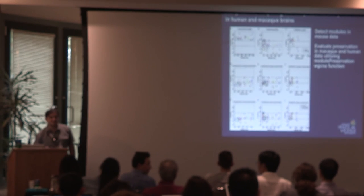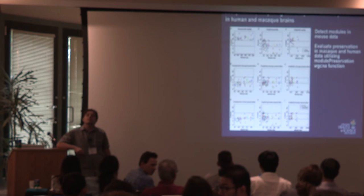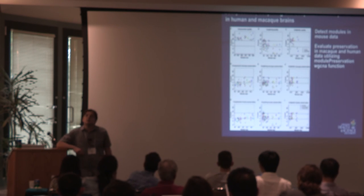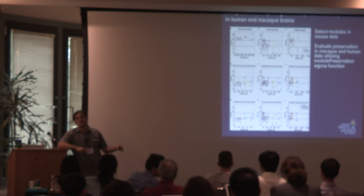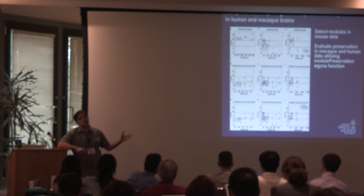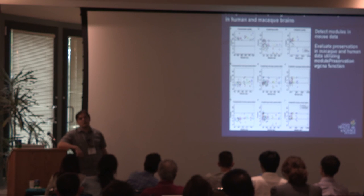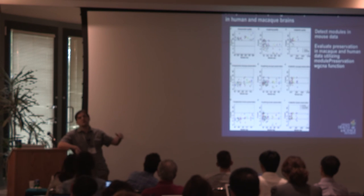Any questions? [Audience question about statistical power.] We have about 20 million reads per sample in this data. I haven't done subsampling analysis yet — for that I would subsample the data and see what happens. My prediction is that for the most highly expressed genes, and especially long genes with lots of reads, you'll be robust. As you go down in expression level, you'll start to lose genes that don't have many reads.